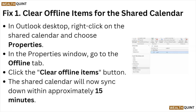Fix number one: clear the offline items for the shared calendar. In the Outlook desktop, right-click on the shared calendar and choose Properties. In the Properties window, go to the Offline tab and click on the Clear Offline Items button. The shared calendar will now sync within approximately 15 minutes.